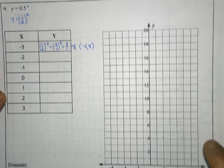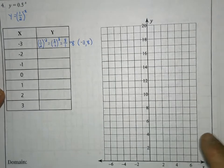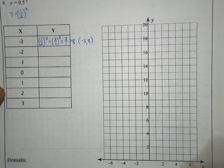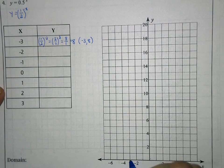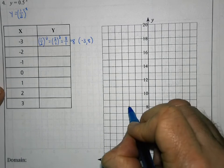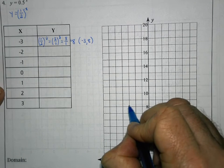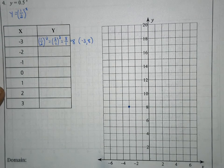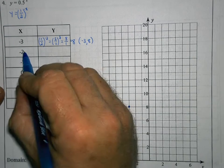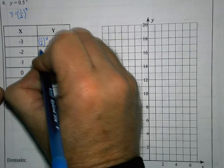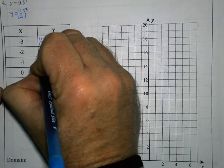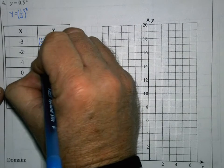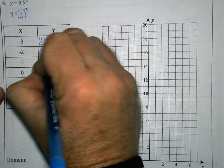I'll use that to plot a point. On the graph, I go to negative 3 on the x-axis, then up to positive 8 on the y-axis and put a point. Then I'll repeat this process, now substituting negative 2 in place of x.